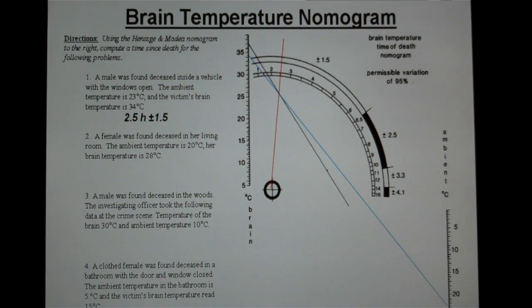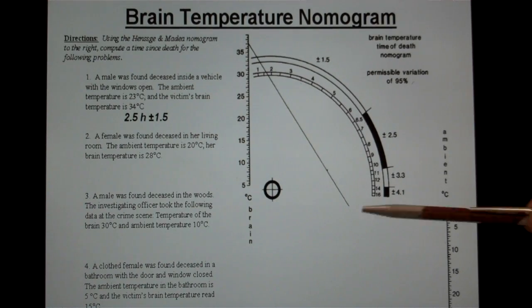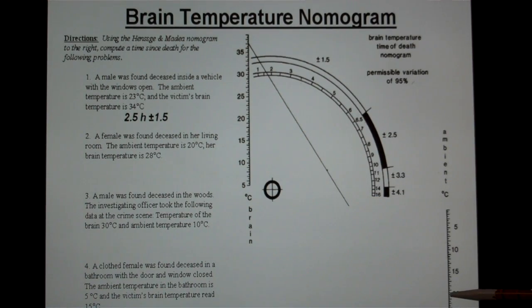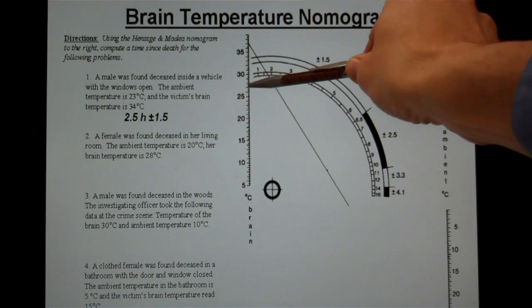The second example here I have, we're looking at a female who was deceased in her living room. The ambient temperature is 20 degrees. Her brain temperature is 28. Again, I'm going to make a mark for the ambient temperature down here at 20. And for the victim's brain temperature, I'm going to make a mark up here at 28.